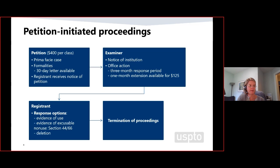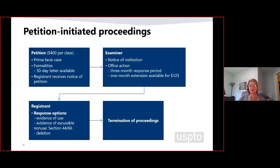If the registrant's response is unacceptable and the proof of use is not accepted, the examiner will issue a final action with another three-month response period. The registrant must respond with a request for reconsideration and a notice of appeal. If that request for reconsideration contains acceptable proof of use or deletion, we will terminate the proceedings. Otherwise, the examiner's decision to cancel can be appealed to the TTAB, and the regular board timelines apply.